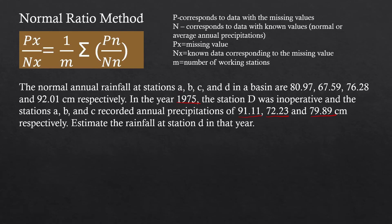First, we need to write down our data. We have Stations A, B, C, and D, and the normal annual rainfall at these stations (N sub N) are these values: 80.97 for A, 67.59 for B, 76.28 for C, and 92.01 for D. In 1975, we have 91.11, 72.23, and 79.89. However, Station D was inoperative, so we have a missing value here.